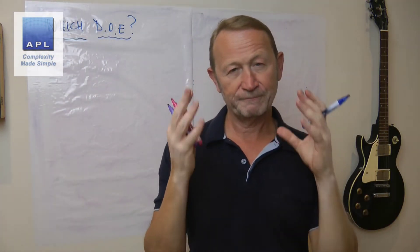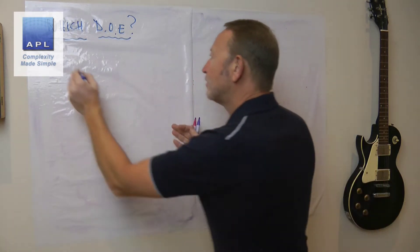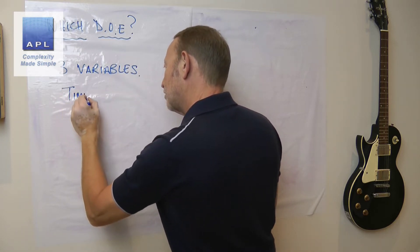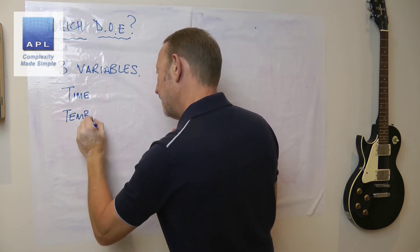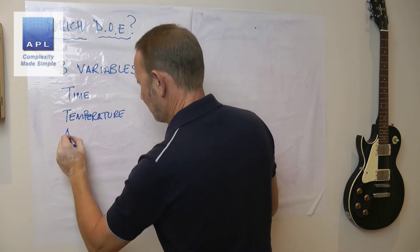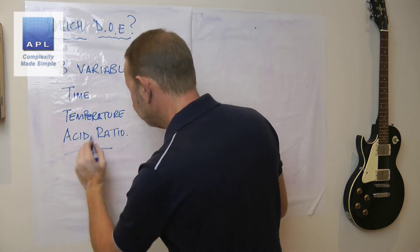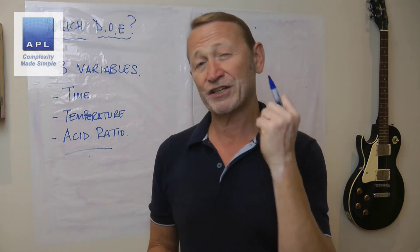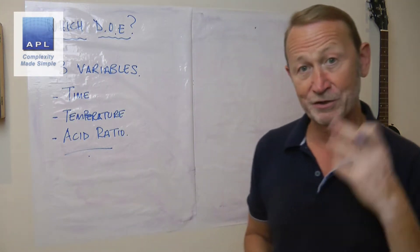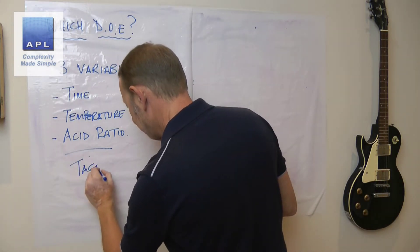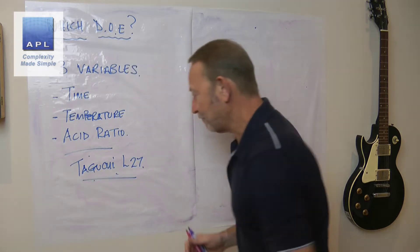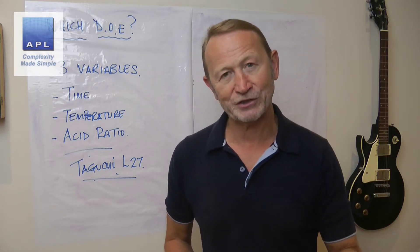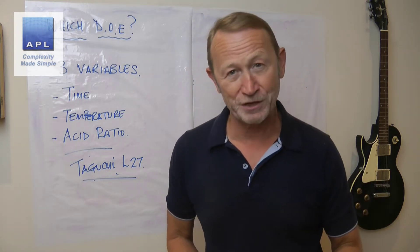Which DOE are we going to use? The person who sent this in is telling me that they have three variables, three inputs: time, temperature, and acid ratio. At the moment they've been looking at a three-factor, three-level experiment and they found a Taguchi L27. That requires 27 setups in the process, and if you replicate that at least once, you're going to need 54 data points.